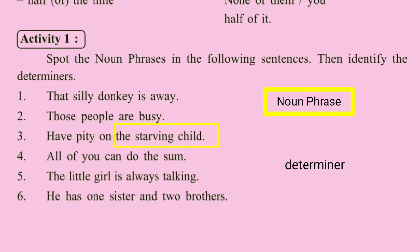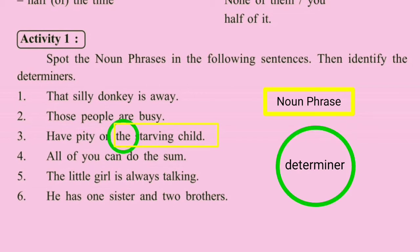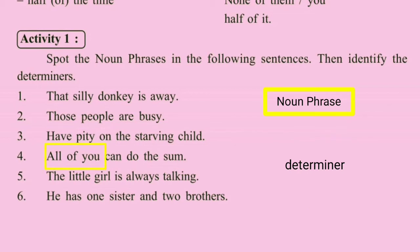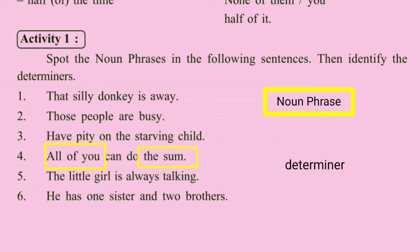Have pity on the starving child. 'The starving child' is a noun phrase with head noun 'child'. 'Starving' is an adjective and 'the' is a determiner (article). 'All of you can do the sum.' 'All of you' is a noun phrase with 'all' as pre-determiner. 'The sum' is another noun phrase with head noun 'sum' and 'the' as determiner.